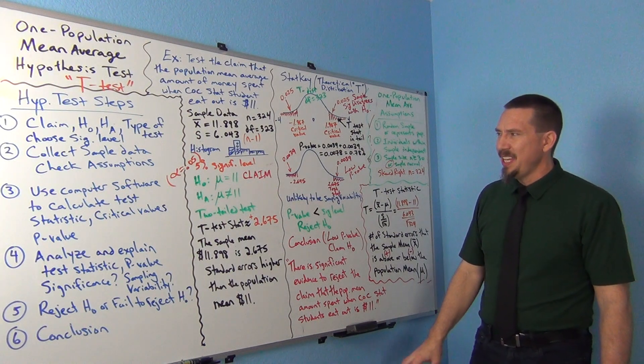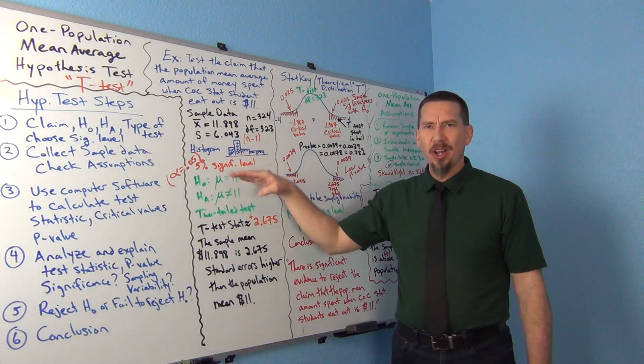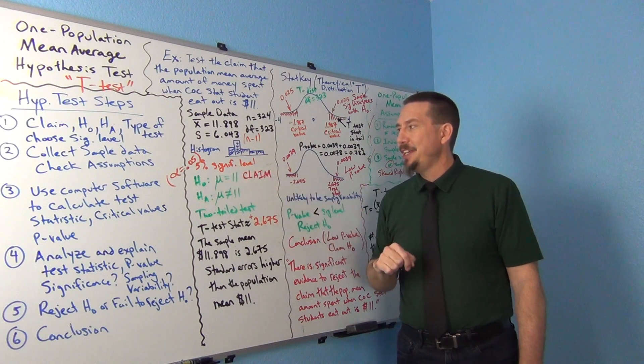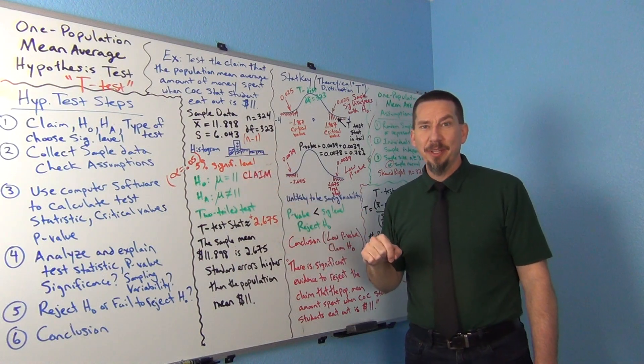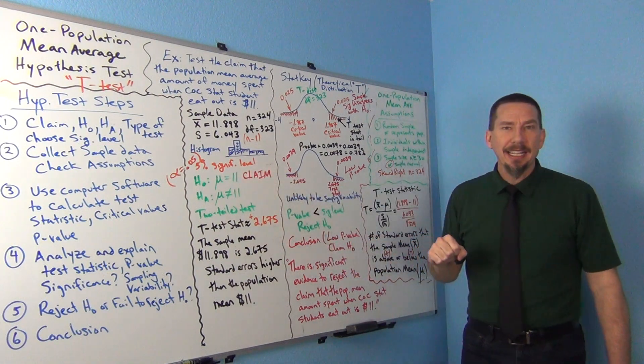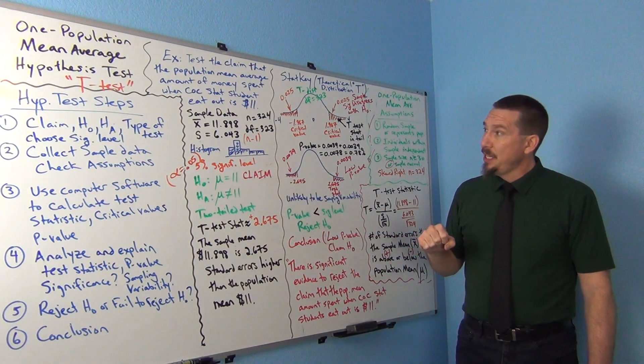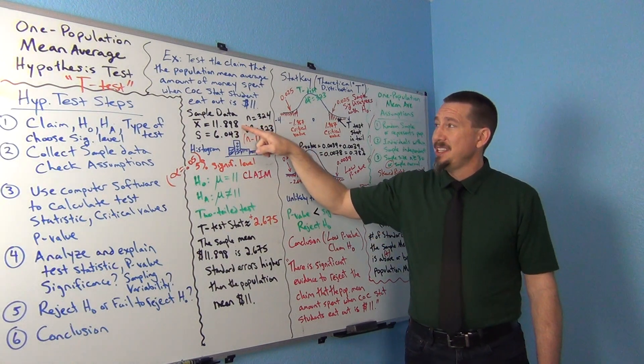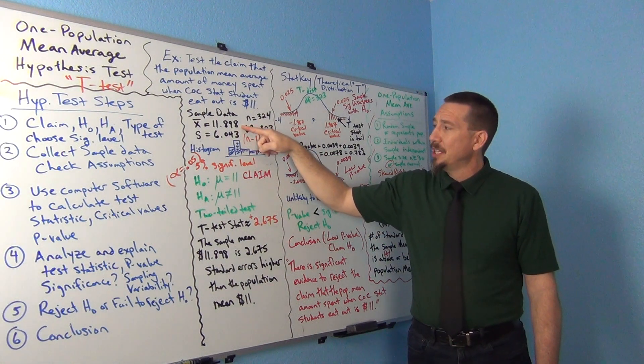So we are basically thinking that claim is wrong, or at least sample data is significantly disagreeing with it. So we are rejecting that claim. That claim probably is wrong. In fact, the sample data actually indicates that it is significantly higher than $11.